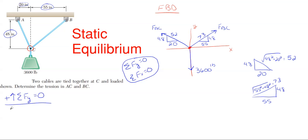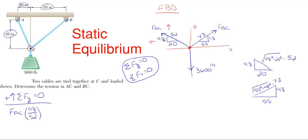Let's start with ΣFy — taking upward as positive and downward as negative, everything must cancel to zero. For FAC, we attach a ratio using the triangle numbers. The hypotenuse always goes in the denominator, so that's 52 for FAC. In the numerator, we use the dimension parallel to the direction we're looking — 48 is vertical and Y is vertical, so we use 48. FAC is positive because it points up and to the left.